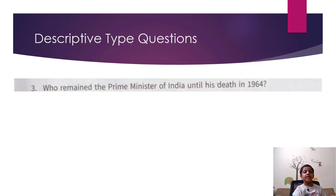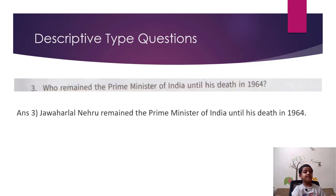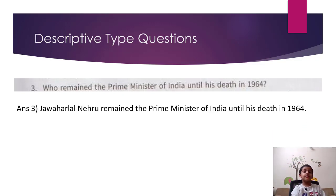Question 3: Who remained the Prime Minister of India until his death? Answer: Jawaharlal Nehru remained the Prime Minister of India until his death in 1964.